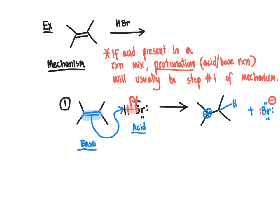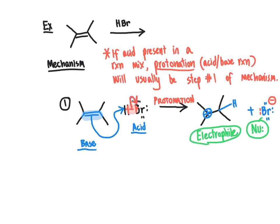Now at this point, since we did step one — which we describe as a protonation step — we've created intermediates of which one is a good nucleophile and the other is an excellent electrophile. The bromide anion is an excellent nucleophile: it has an excess of electron density and that negative formal charge, making it highly qualified to act as a nucleophile. On the other hand, carbocations make excellent electrophiles — they're very hungry for more electron density. So in step two, we're just going to plug those two together: the nucleophile attacks the electrophile.